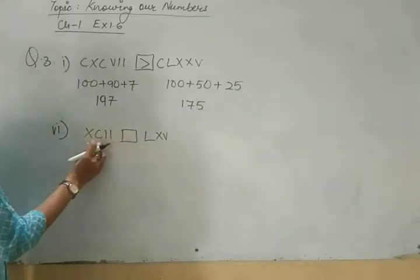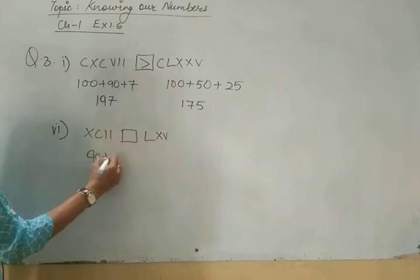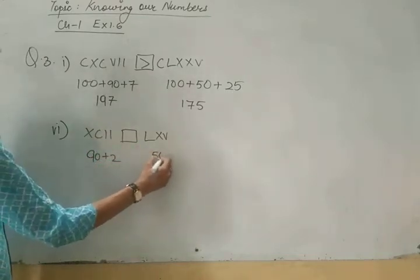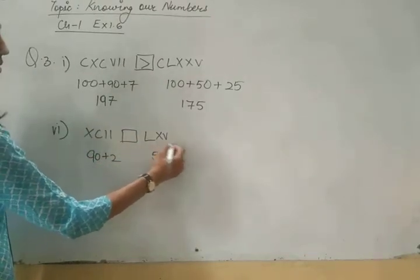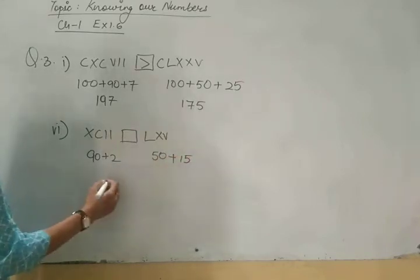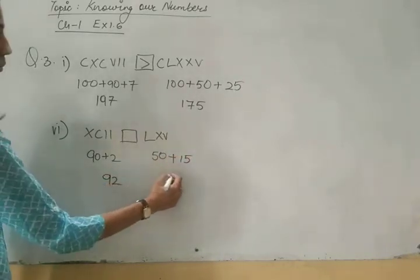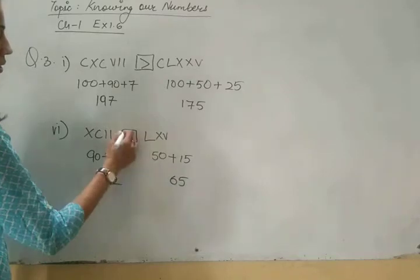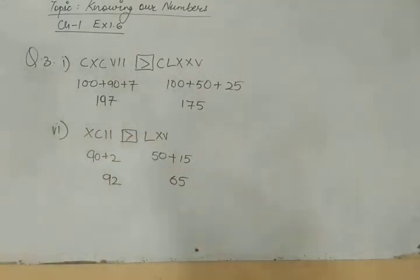XCII means 90 plus 2. This is 92. This is 65. It means this is bigger. Clear? First change it into Hindu Arabic than put sign.